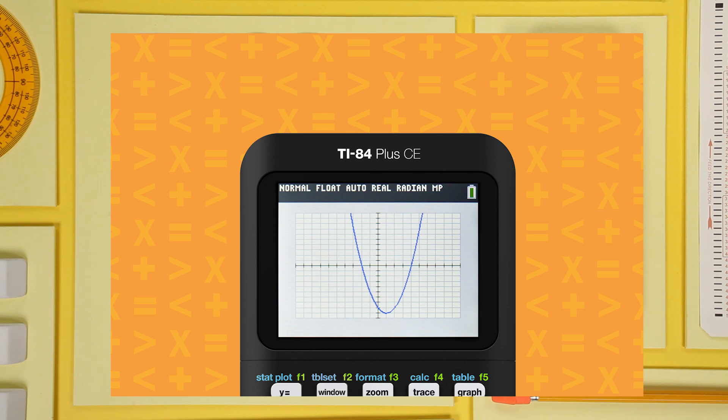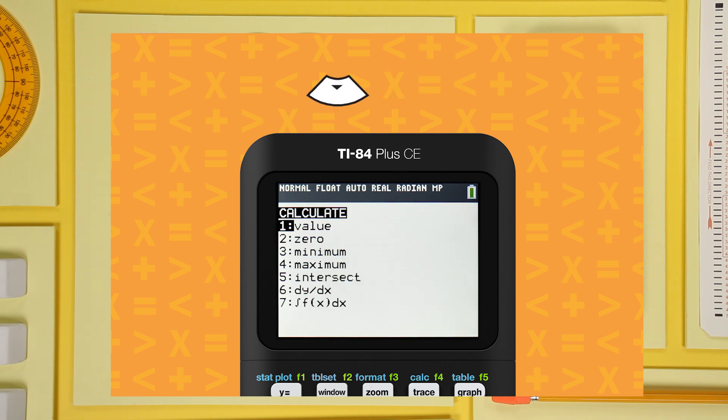Now let's open the calc menu. It's the blue command over the trace key. So press second to activate the blue commands and calc. Select minimum and press enter.